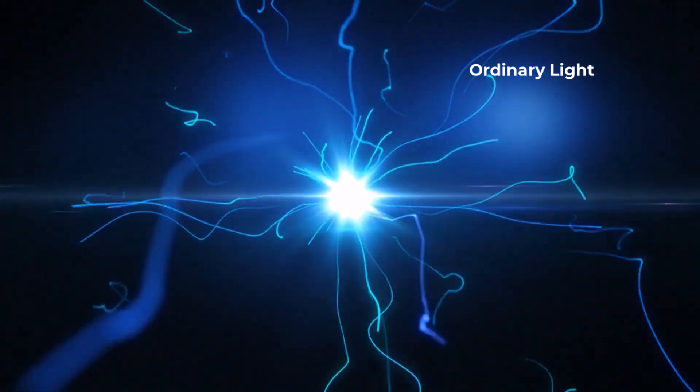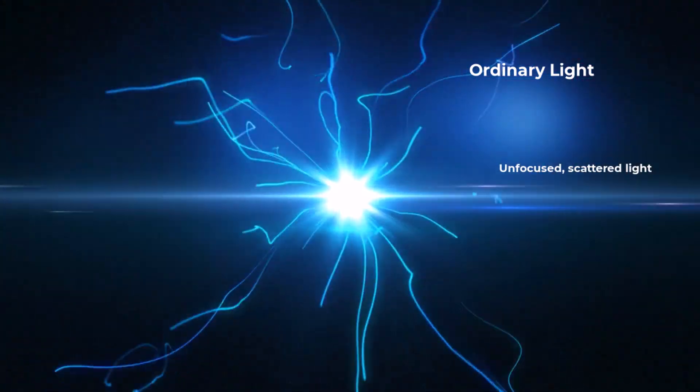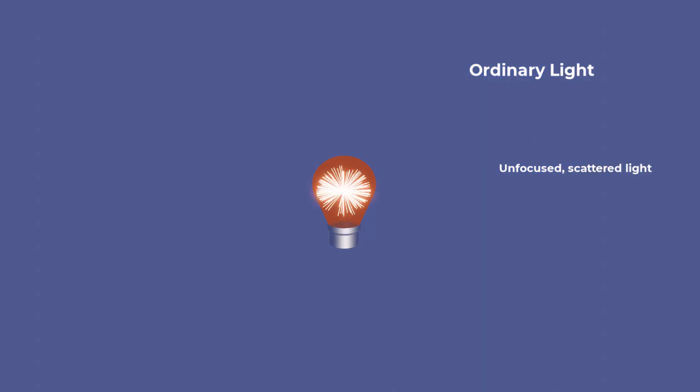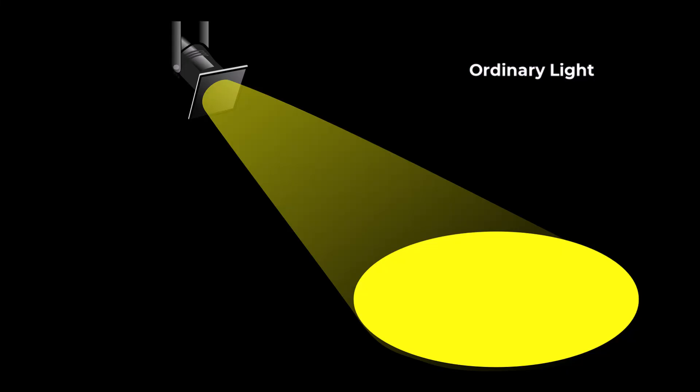Also, the waves of ordinary light are not organized. They move in different directions and at different times, making the light unfocused and scattered. That's why when you turn on a flashlight, the beam spreads out and lights up a wide area.